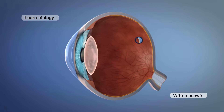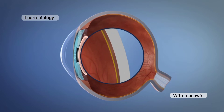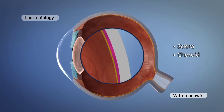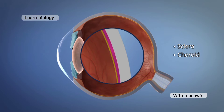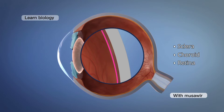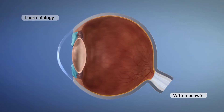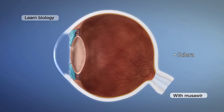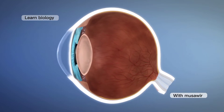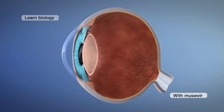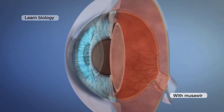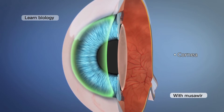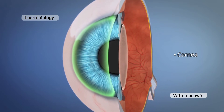The eyeball is composed of three layers: outer sclera, middle choroid, and inner retina. The sclera is the outer white layer. The anterior part of the sclera has a circular area called cornea, through which light enters the eye.